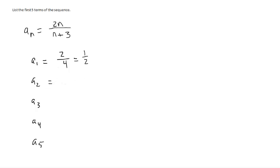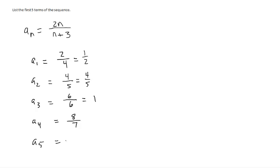When we plug 2 in, we get 2 times 2 in the numerator, which is 4, divided by 2 plus 3 is 5, so 4/5. When we plug 3 in, we get 6 in the numerator and 6 in the denominator, which is equal to 1. When we plug 4 in, we get 8 in the numerator and 7 in the denominator, so 8/7. And when we plug 5 in, we have 10 divided by 8, which is equal to 5/4.